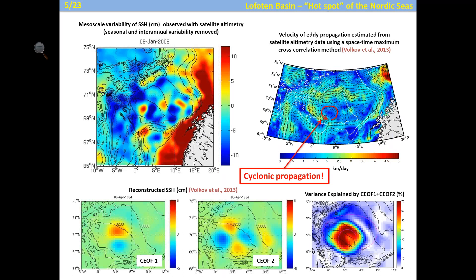We also decomposed this mesoscale variability into complex empirical orthogonal functions and found that most of the variance in the center of the basin, where the Lofoten Vortex is located, is mainly explained by two modes: a dipole mode and a quadrupole mode. These patterns rotate cyclonically around the basin.